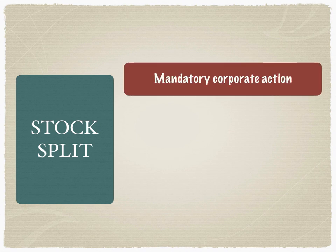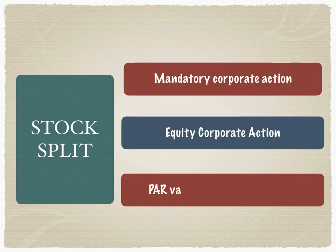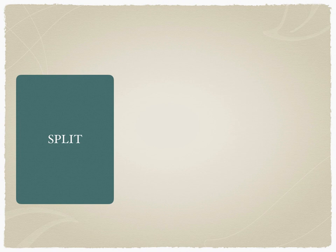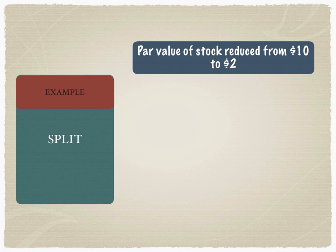Let's take a look at stock split. A stock split is a mandatory corporate action — it is an equity corporate action where the par value of the stock is reduced. One of the ways a stock split announcement is made is to announce that the par value is reduced, let's say from ten dollars to two dollars. Par value is the term also used for face value or nominal value for equity instruments.